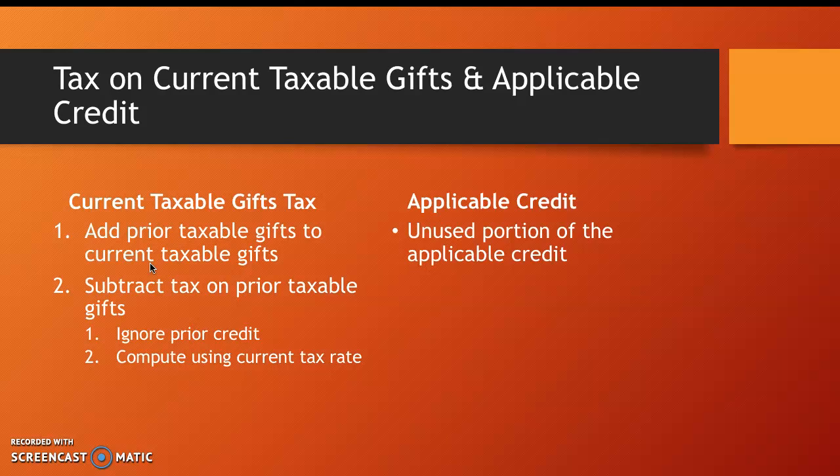To calculate the gift tax, we will first add back prior taxable gifts to the current taxable gifts. Then we would subtract tax paid on prior gifts — but we will ignore prior credit in that figure, and we will use the current tax rate instead of the prior tax rate. And then finally, we will be able to apply the unused portion of the credit.